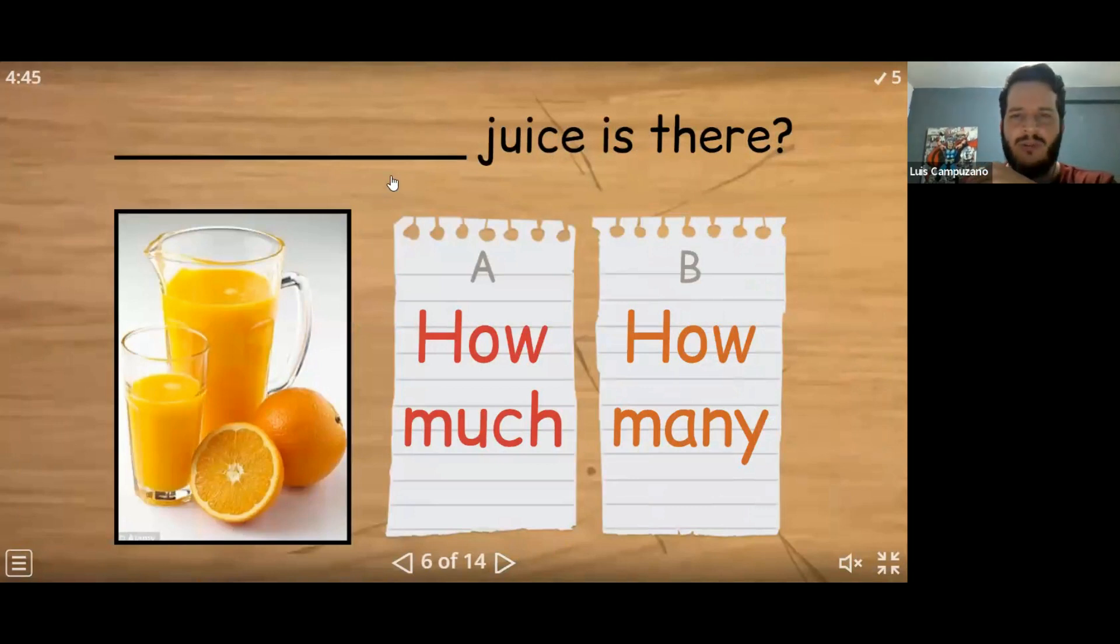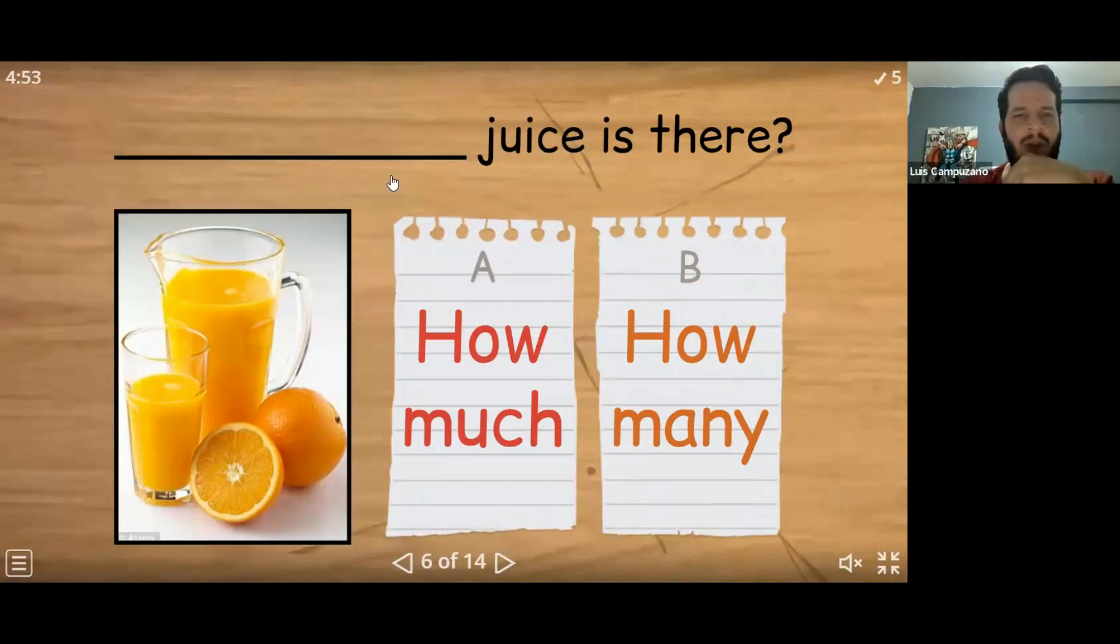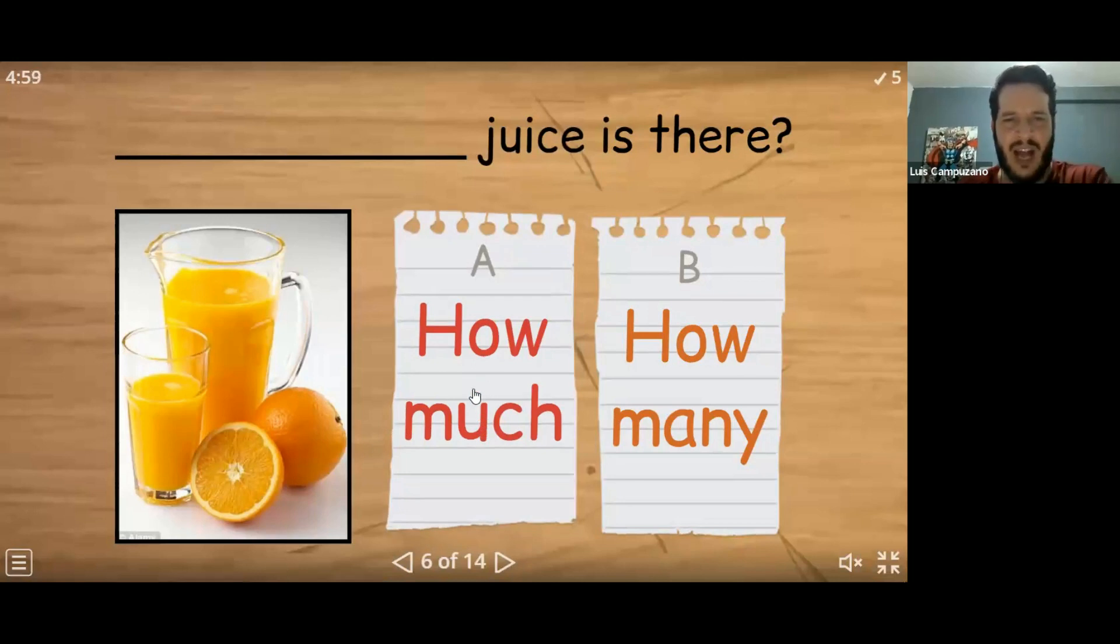All right. I'm going to go back to Andrus. Andrus, help me with this one, please. All right. How much juice is there? Very good. Good pronunciation, Andrus. How much juice is there is correct. Andrus is on fire. Good job, my man.